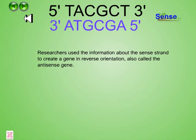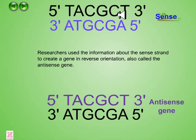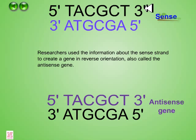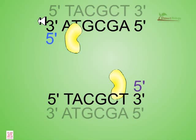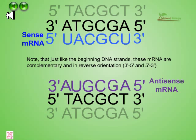Researchers used the information about the sense strand to create a gene in reverse orientation, also called the antisense gene. If we produce the antisense gene, the gene which normally codes for the sense region is changed so that the sense gene becomes antisense and the antisense becomes sense — essentially inverting the orientation.